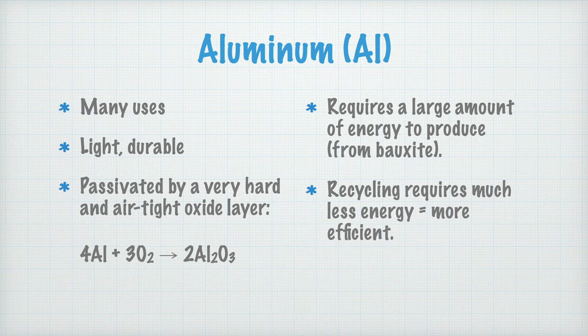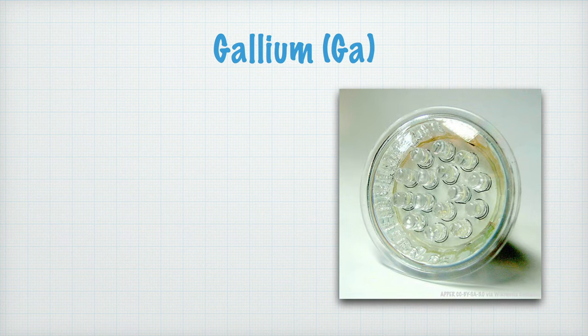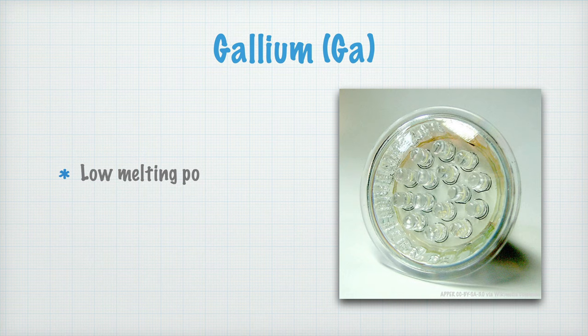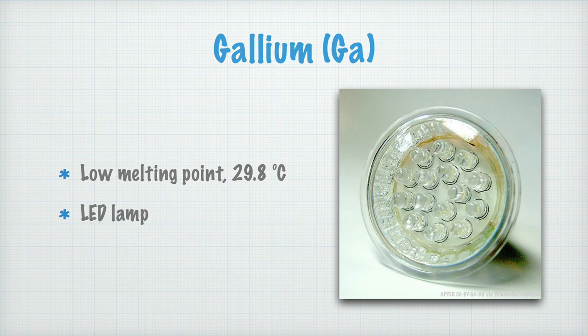The third element in the boron group that you should learn about is gallium, with the chemical symbol Ga. Gallium metal has a very low melting point, at least for being a metal. It melts already at 29.8 degrees centigrade. So, if you hold a piece of gallium metal in your hand, it will melt. Gallium is used in particular in LEDs, light emitting diodes, to get white light.